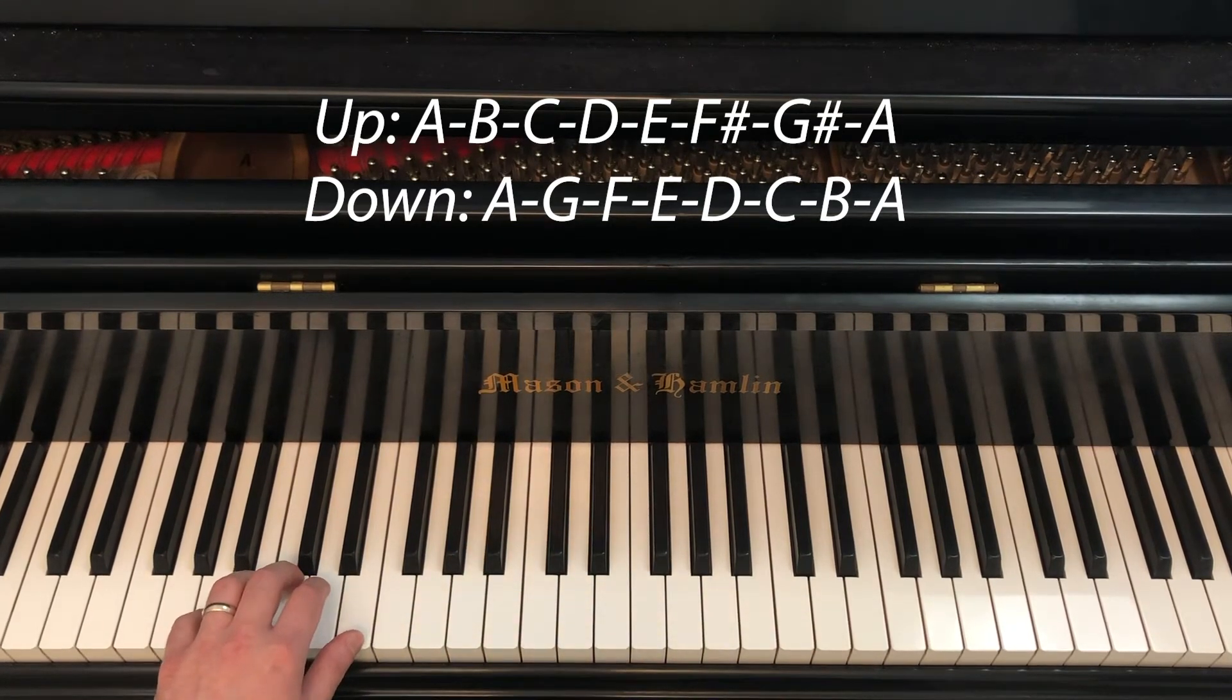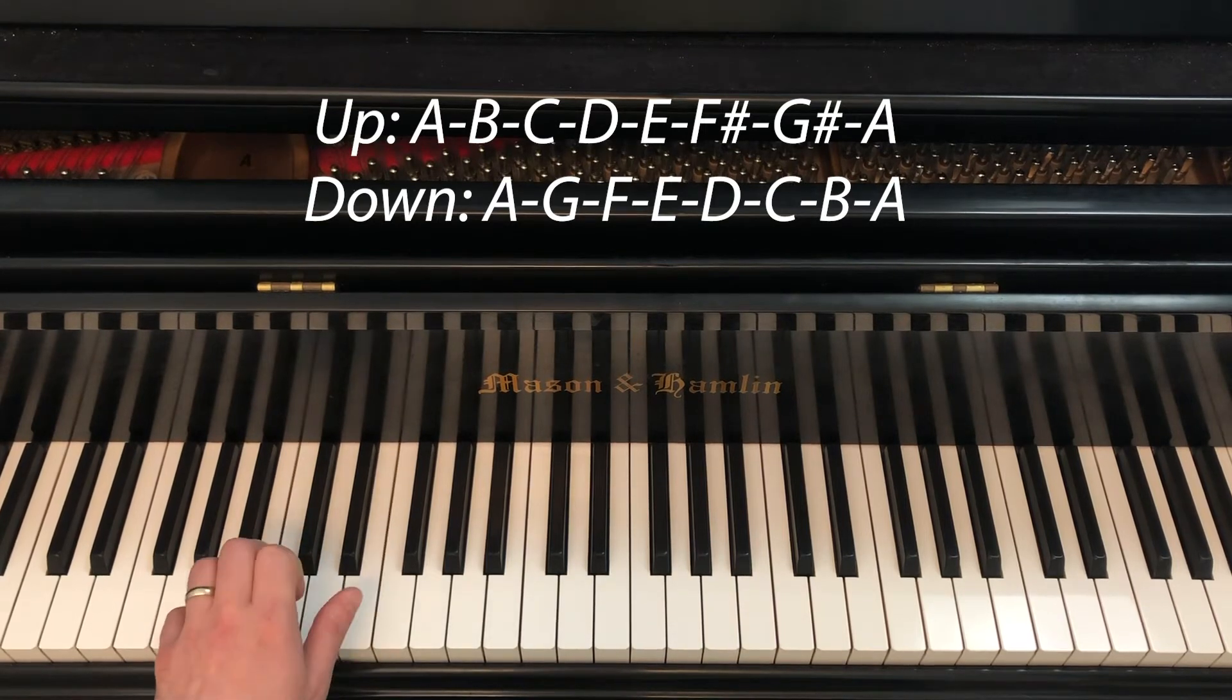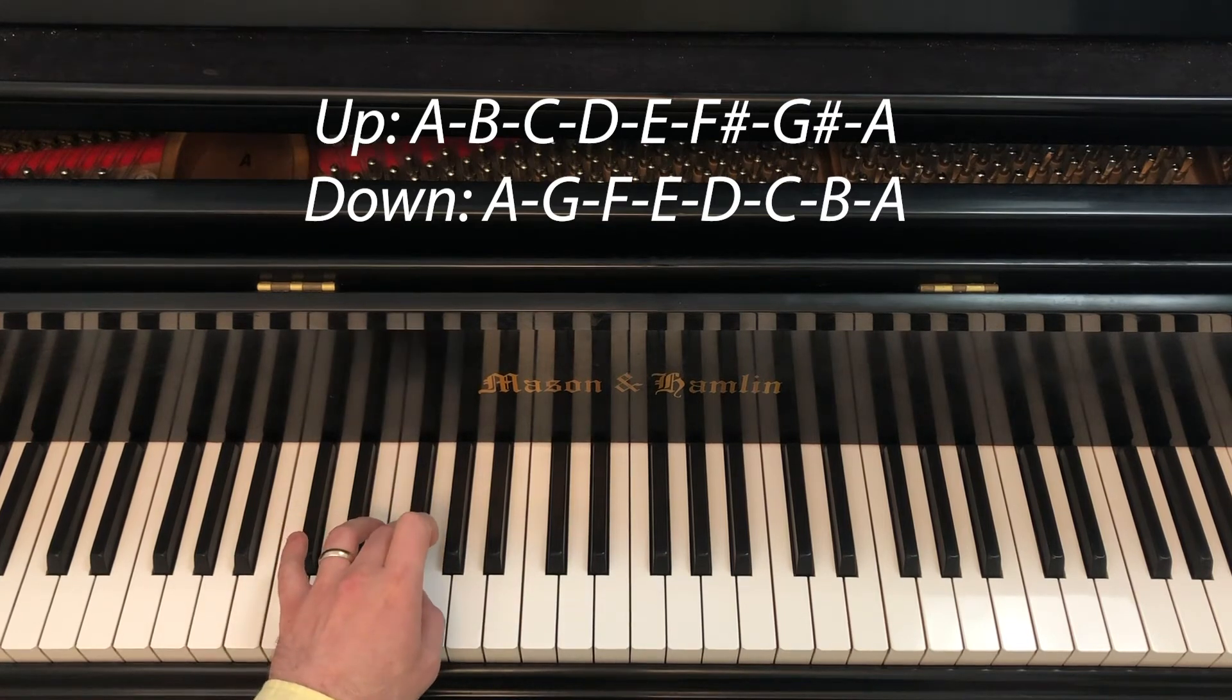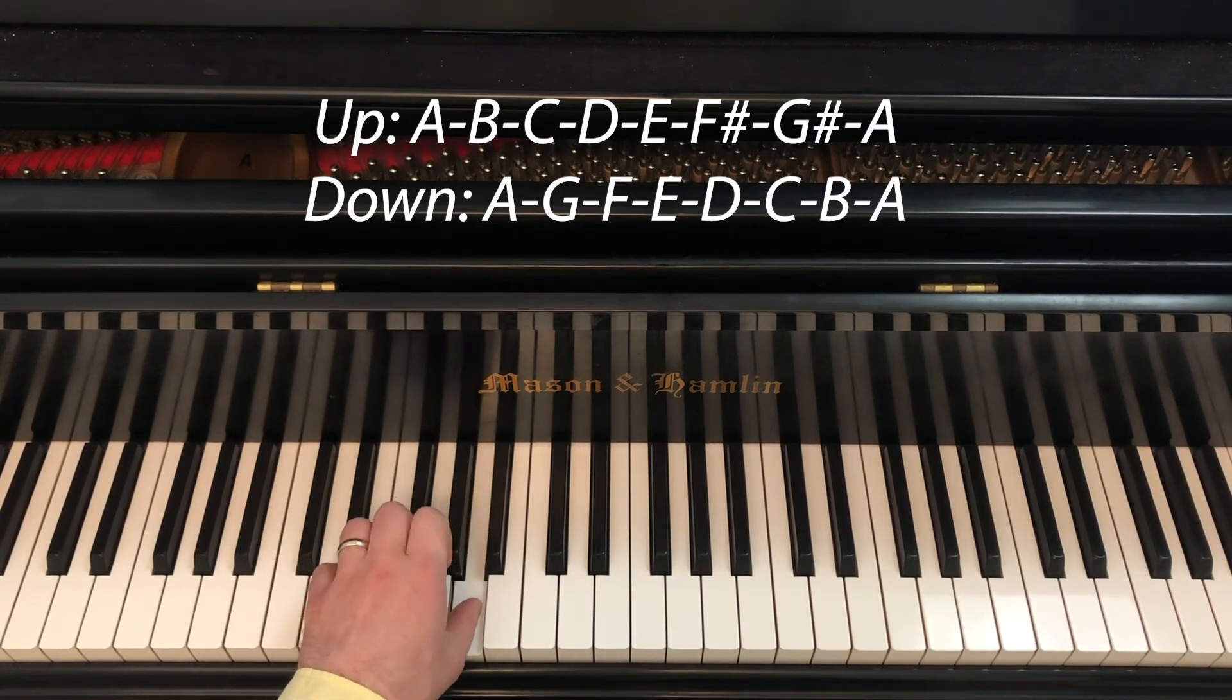In the left hand we start with the pinky on A and we have 5 4 3 2 1, A B C D E. Then we have the 3rd finger on F sharp and we do 3 2 1, F sharp G sharp A.